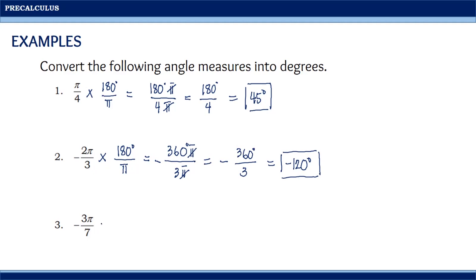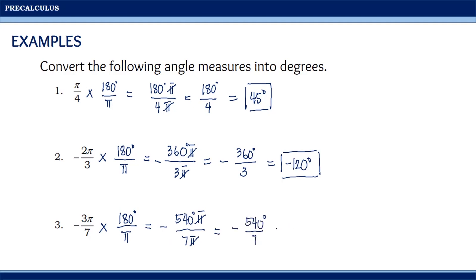For the third one, multiplying by 180 degrees over π, we have 3π times 180 degrees, equal to 540π, all over 7π. Simplifying, we get negative 540 degrees over 7, which equals negative 77.14 degrees. Therefore, negative 3π over 7 is equal to negative 77.14 degrees.